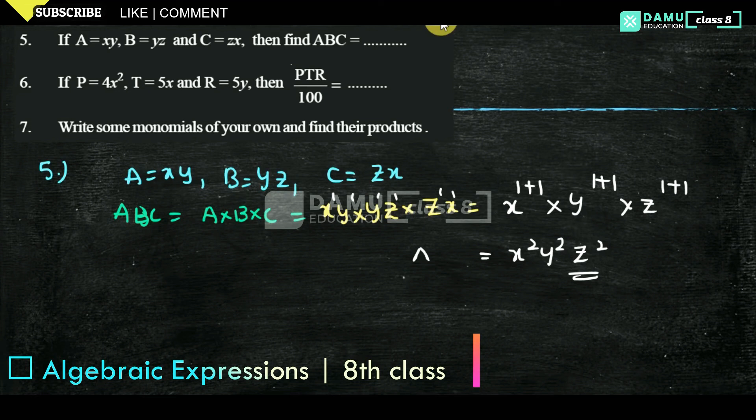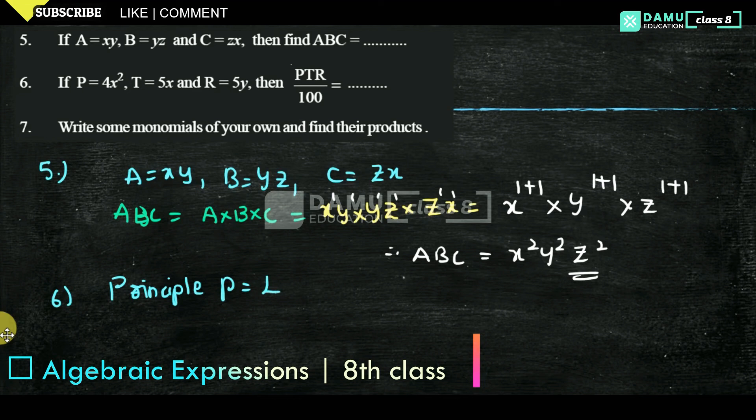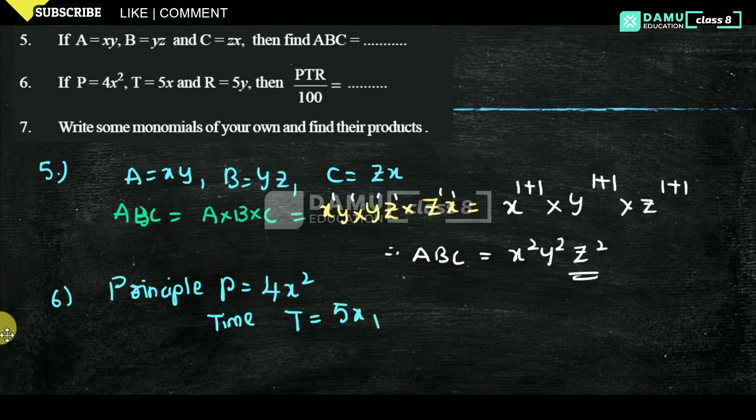Product of ABC is nothing but x squared, y squared, z squared. Now question 6. What is here? Let us take principle: P will be equal to 4x squared, then time T will be equal to 5x, then rate of interest R will be 5y.